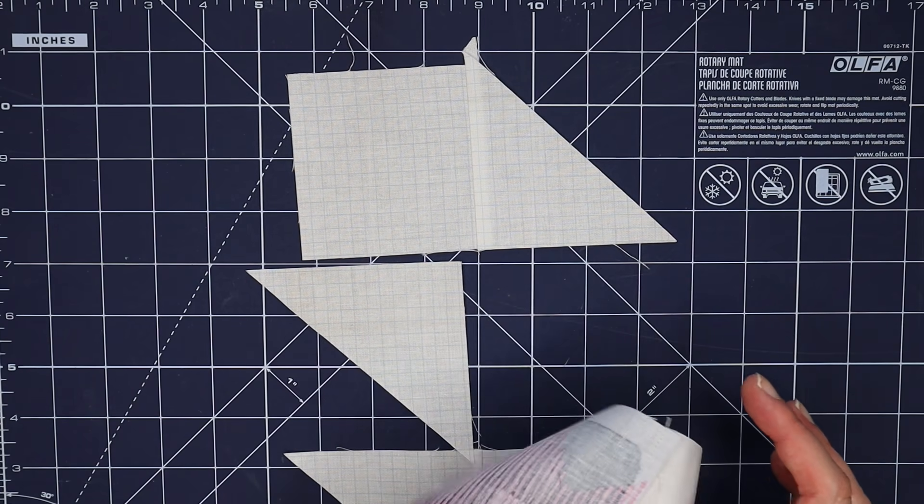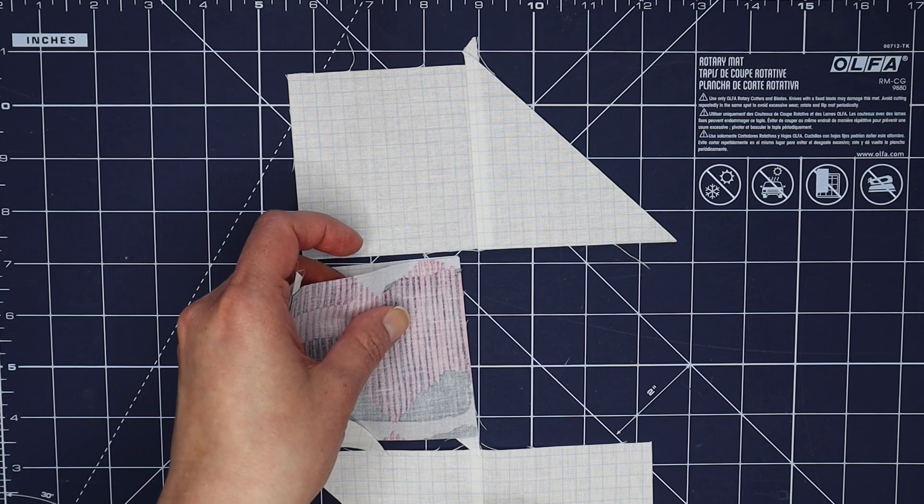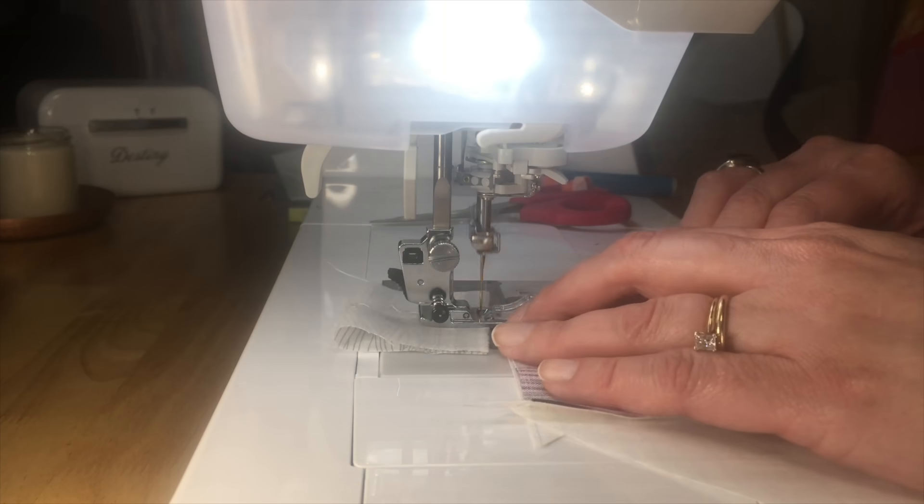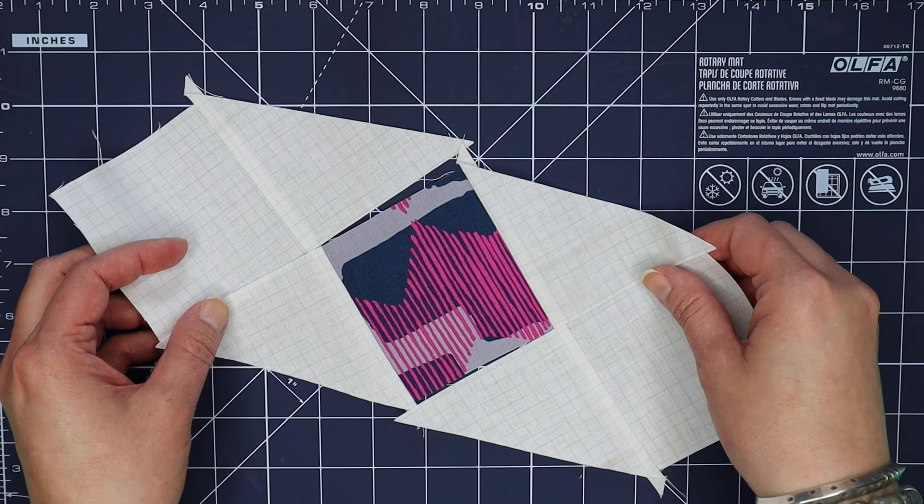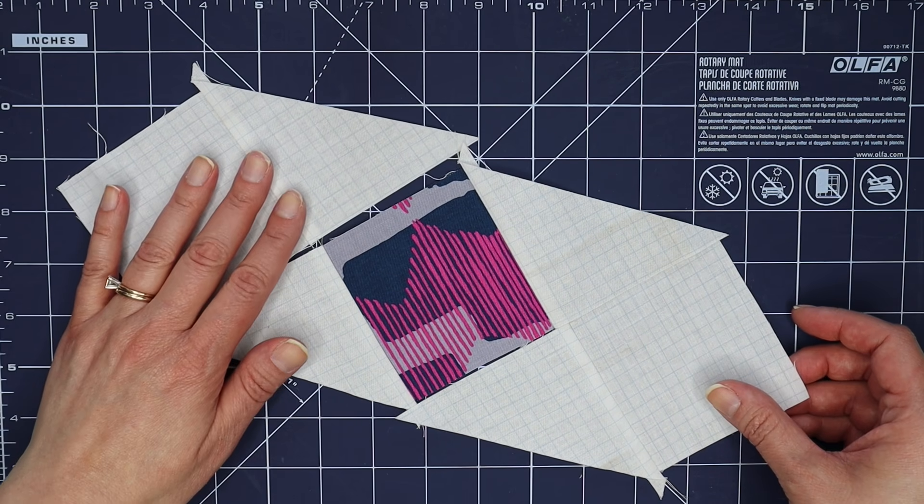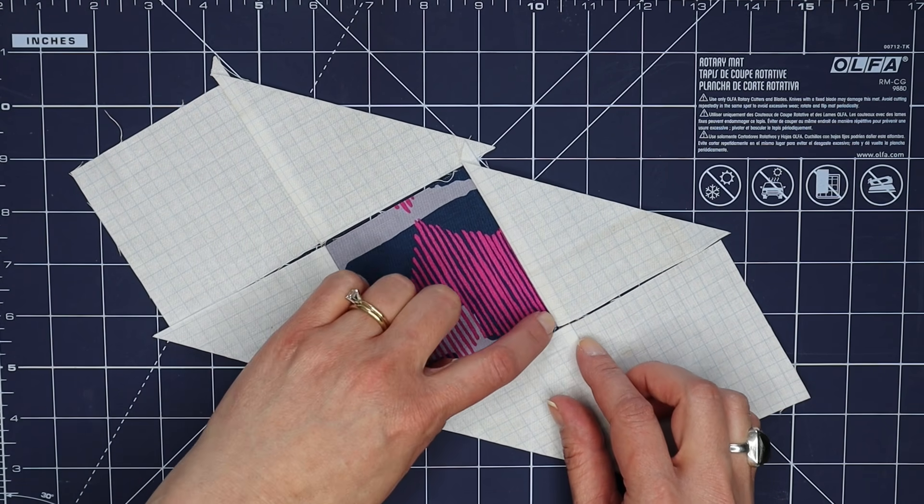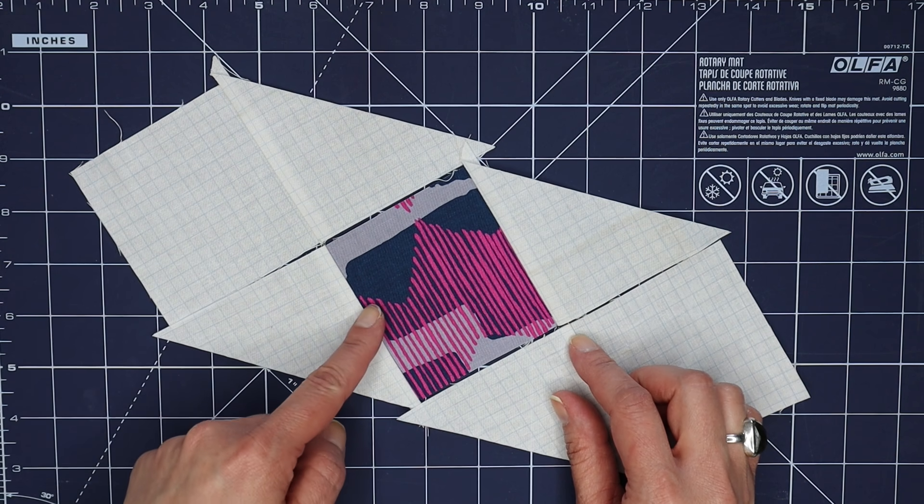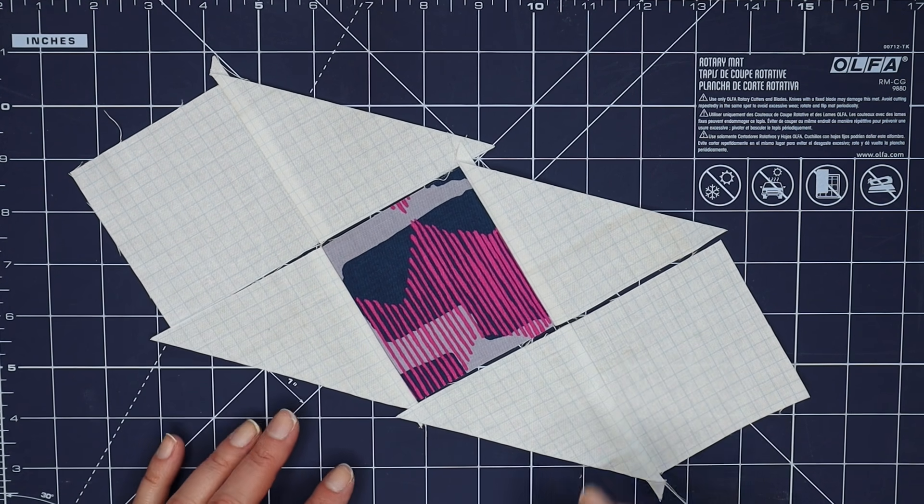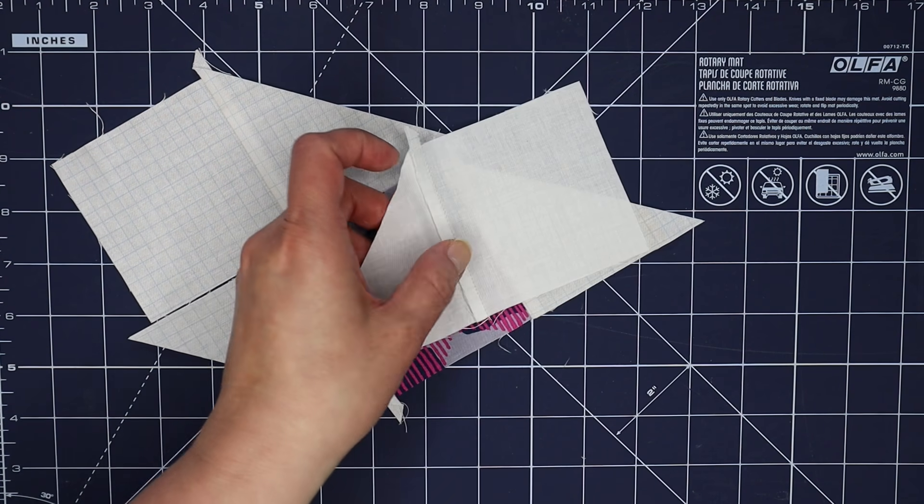Once again just a nice quick seam and we're going to flip this over and stitch here as well. This is our center unit and we're going to nest these seams here and not worry about the edges as much as these matching up and making sure that our seams are straight, so let's pin this first one.